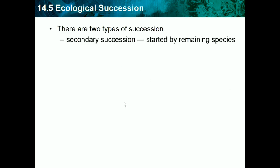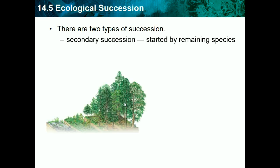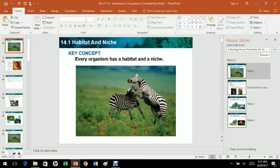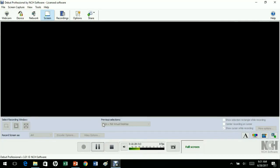Secondary succession is started by remaining species after a disturbance such as a natural disaster. After a forest fire, some plants survive, and those remaining organisms reproduce and restart a new forest. That's the end of Chapter 14, Interactions in Ecosystems. Next time we'll be doing Chapter 15.